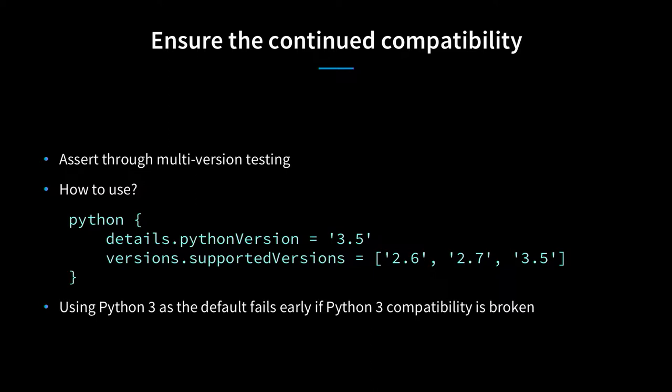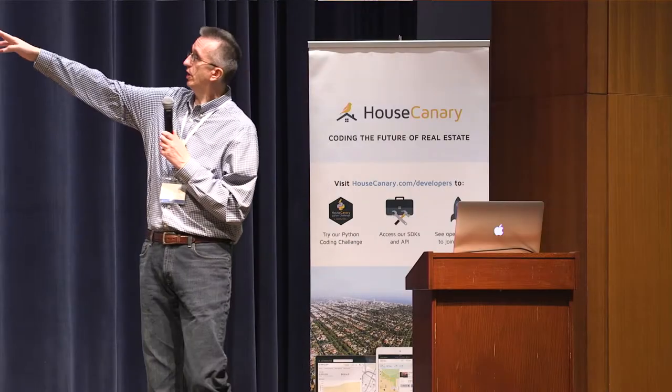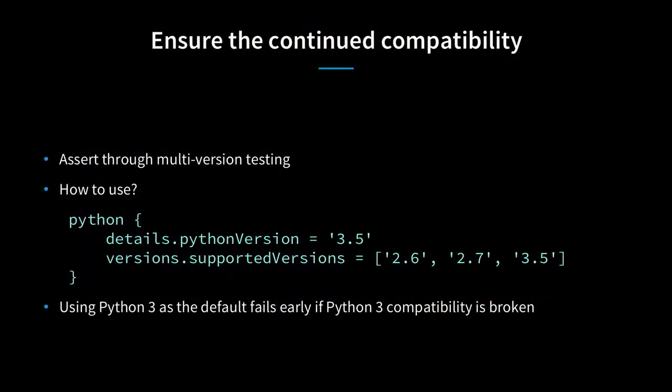This is how we set up the configuration to ensure multi-version testing and thereby ensure compatibility. I personally prefer to put the default Python version to build with as Python 3—we can now use 3.6. Why? Because it fails early: if something breaks Python 3 compatibility, that's the first build that fails instead of the third. The `supportedVersions` extension will enforce building and testing with all three Python versions. It's smart enough to recognize your default is 3.5, so it can skip and not build with 3.5 again by default.